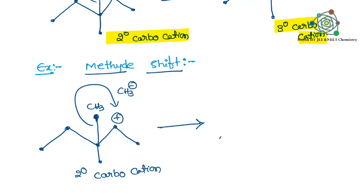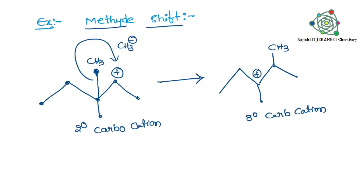So here also same thing. This methide, that is CH3 minus, is shifting to this side. This second degree carbocation is coming to third degree, changed to third degree carbocation.